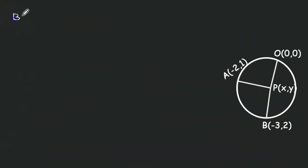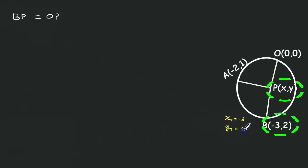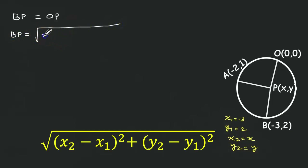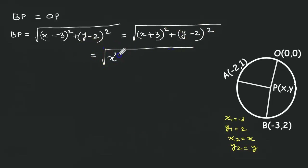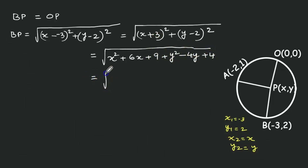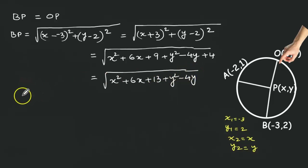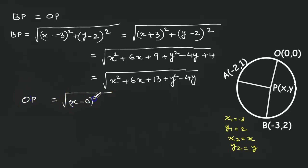Now BP equals OP. The coordinate of B is (-3, 2), and P is (x, y). So x1 equals -3, y1 equals 2, x2 equals x, y2 equals y. The length of BP equals root of (x minus (-3)) squared plus (y minus 2) squared, which is root of (x plus 3) squared plus (y minus 2) squared. Expanding: root of x squared plus 6x plus 9 plus y squared minus 4y plus 4.